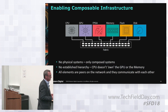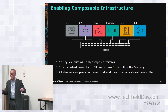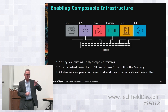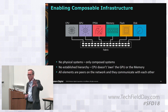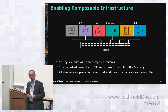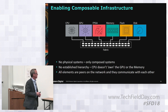What enables composable infrastructure is breaking apart these resources, taking out the traditional hierarchy where a CPU governs everything else as the kingpin. If we want resources to be flexible, malleable, and composable, we want them all to be horizontal peers and equivalents. That will give us the greatest efficiency going forward.